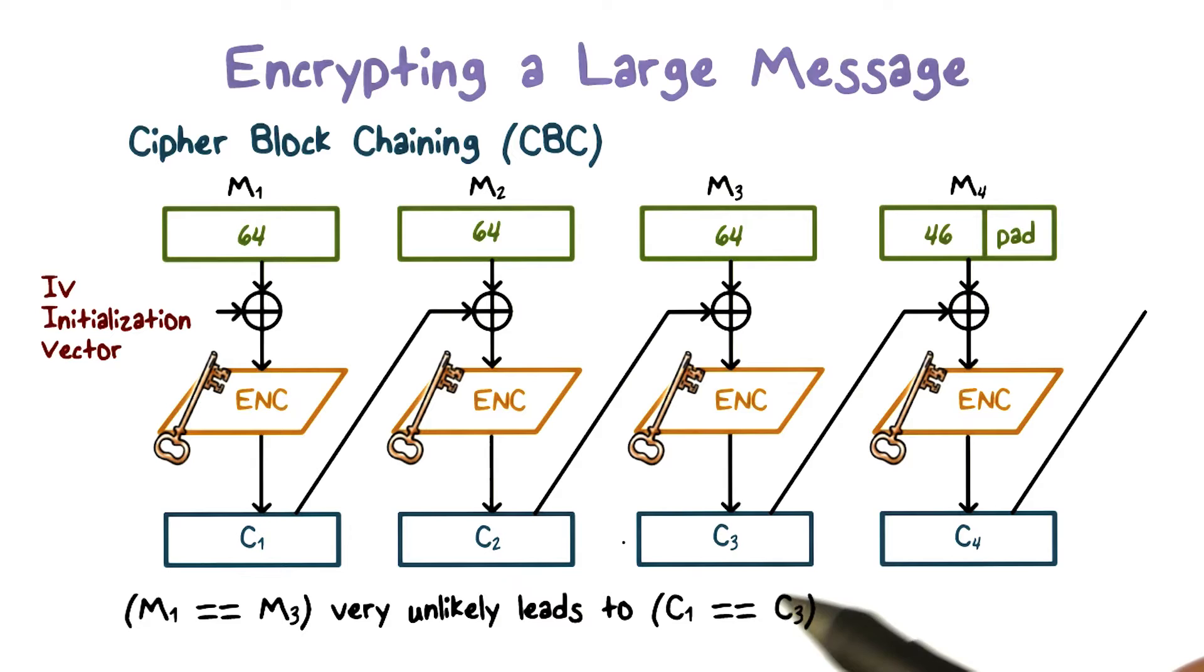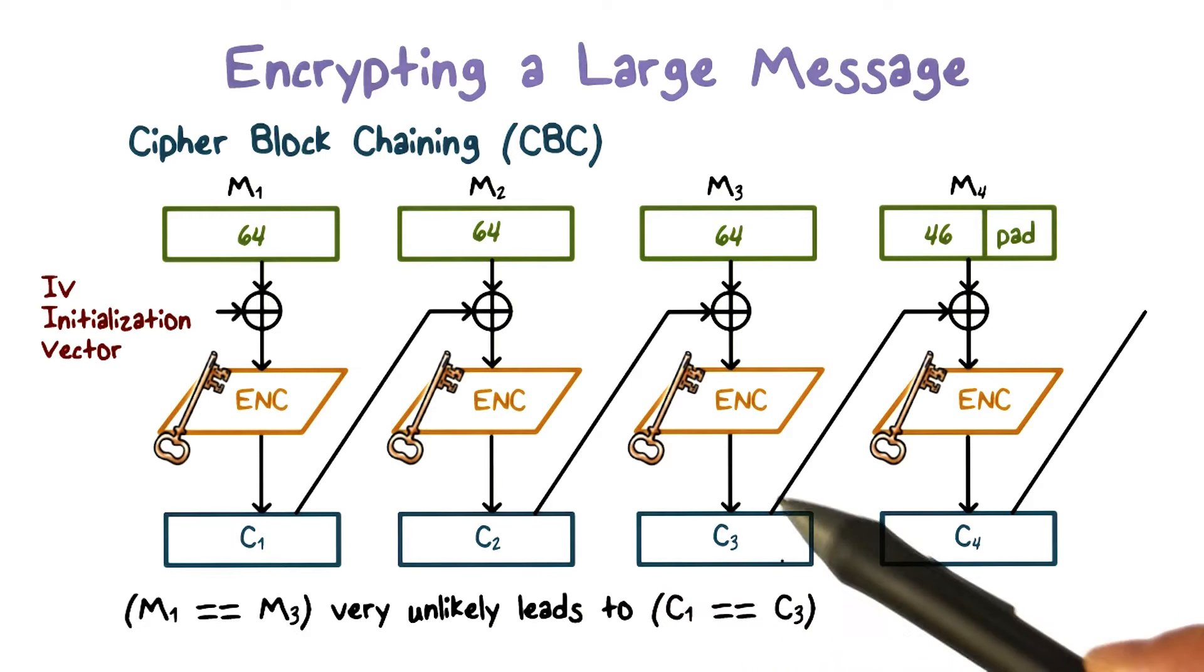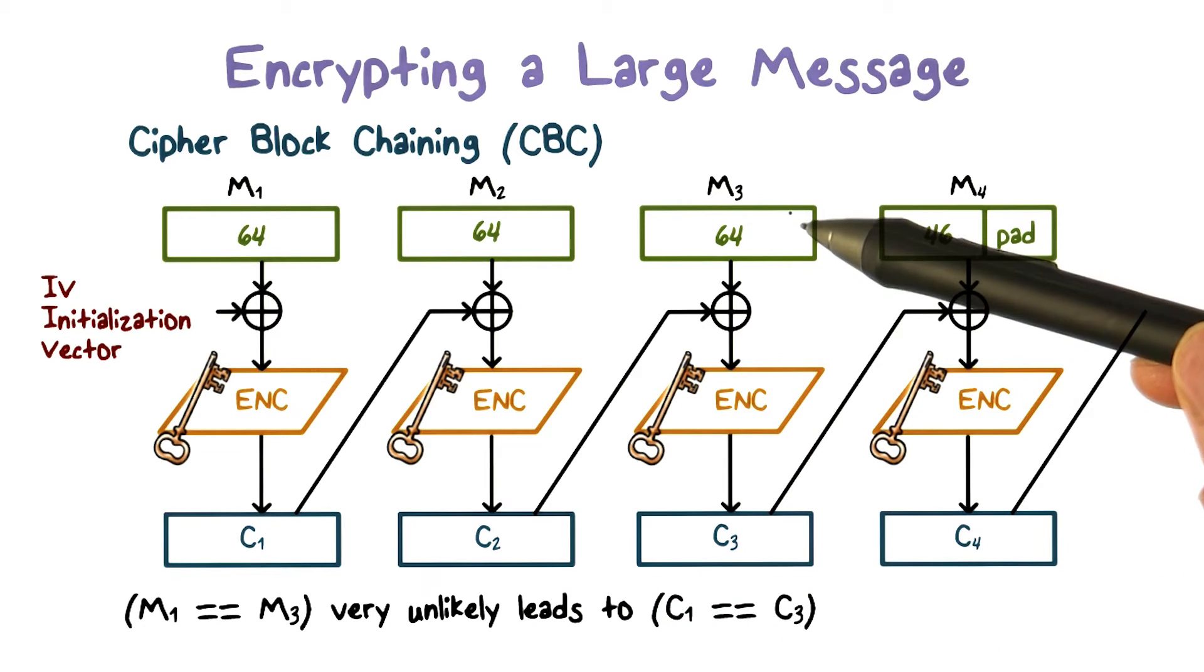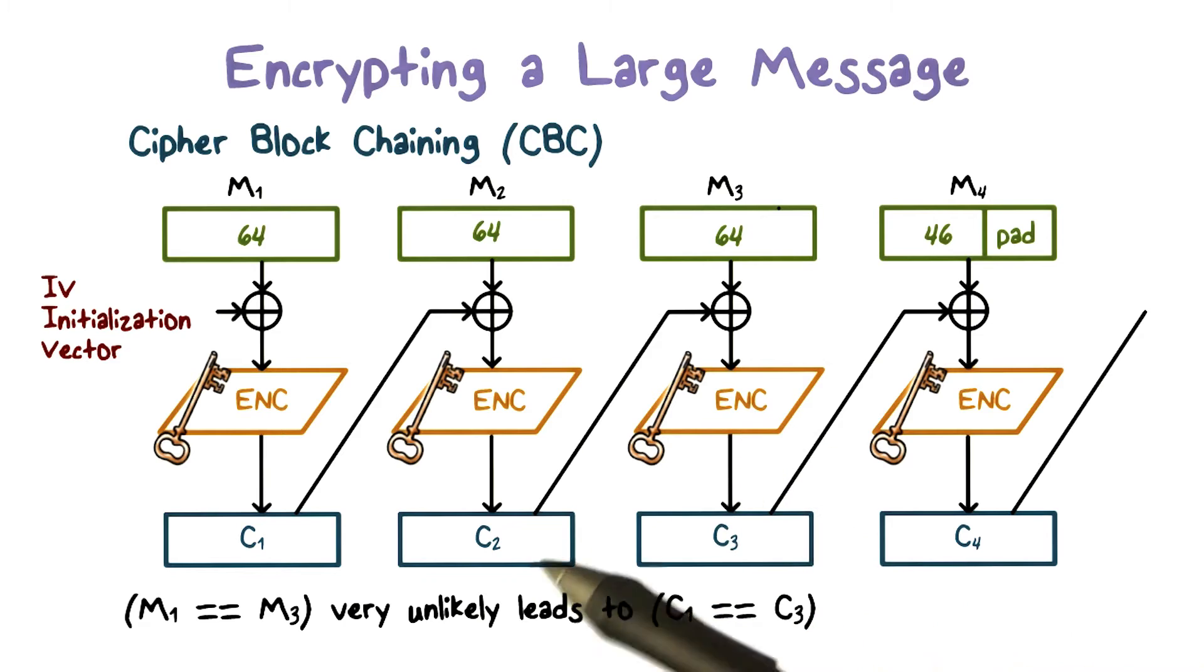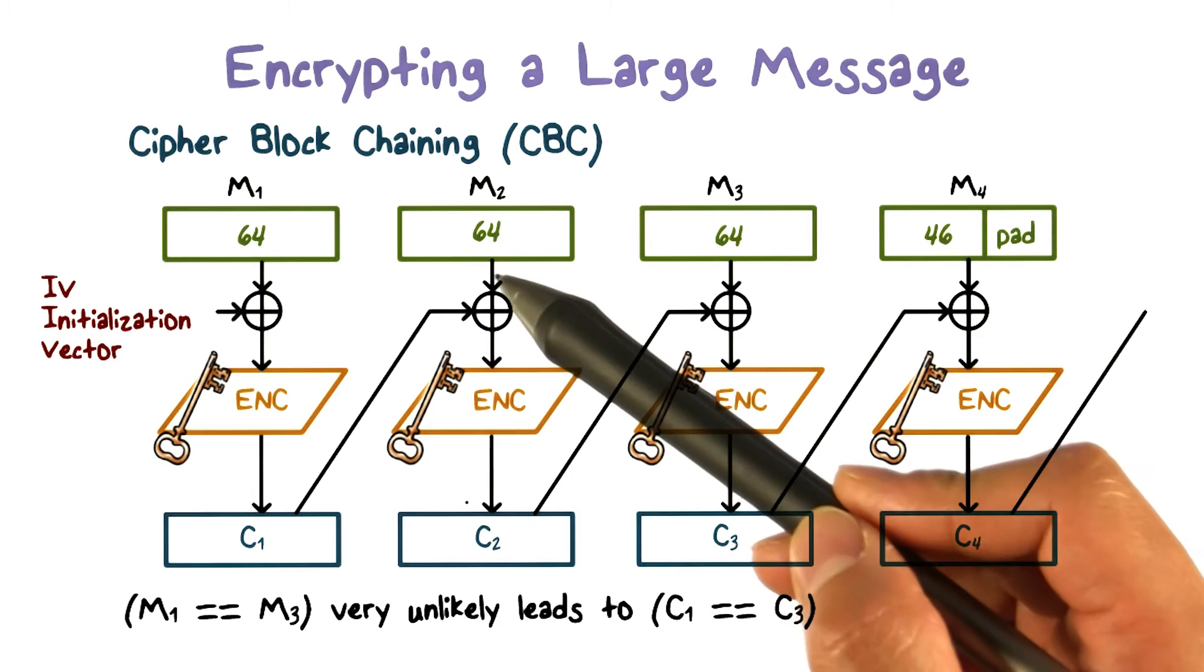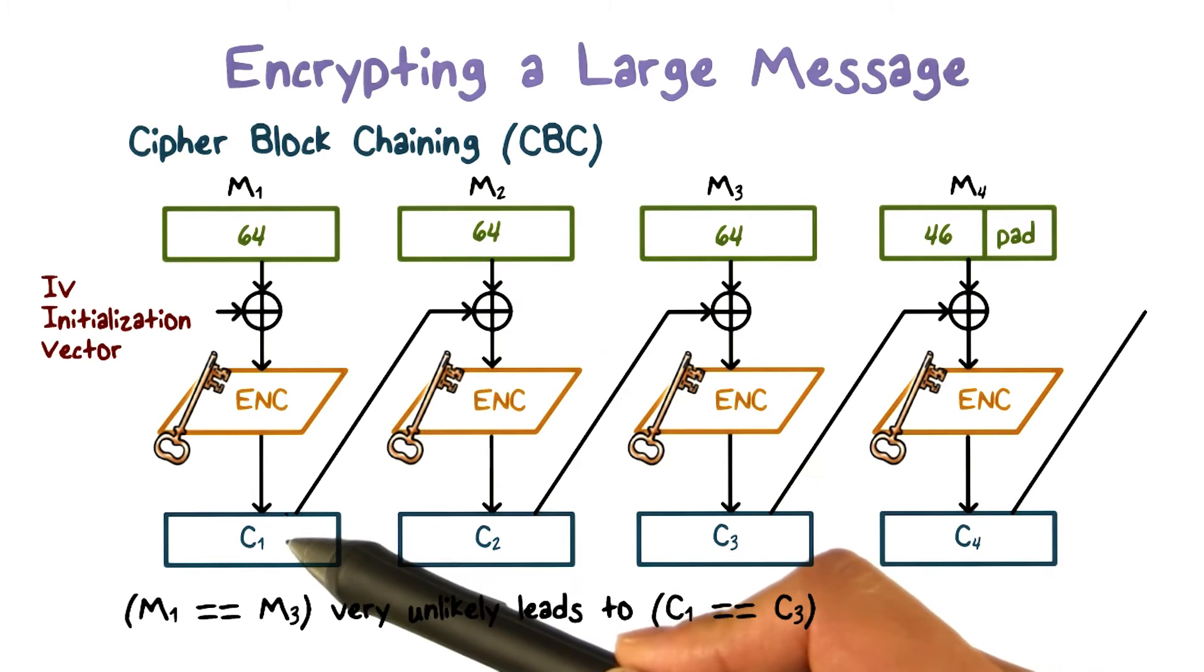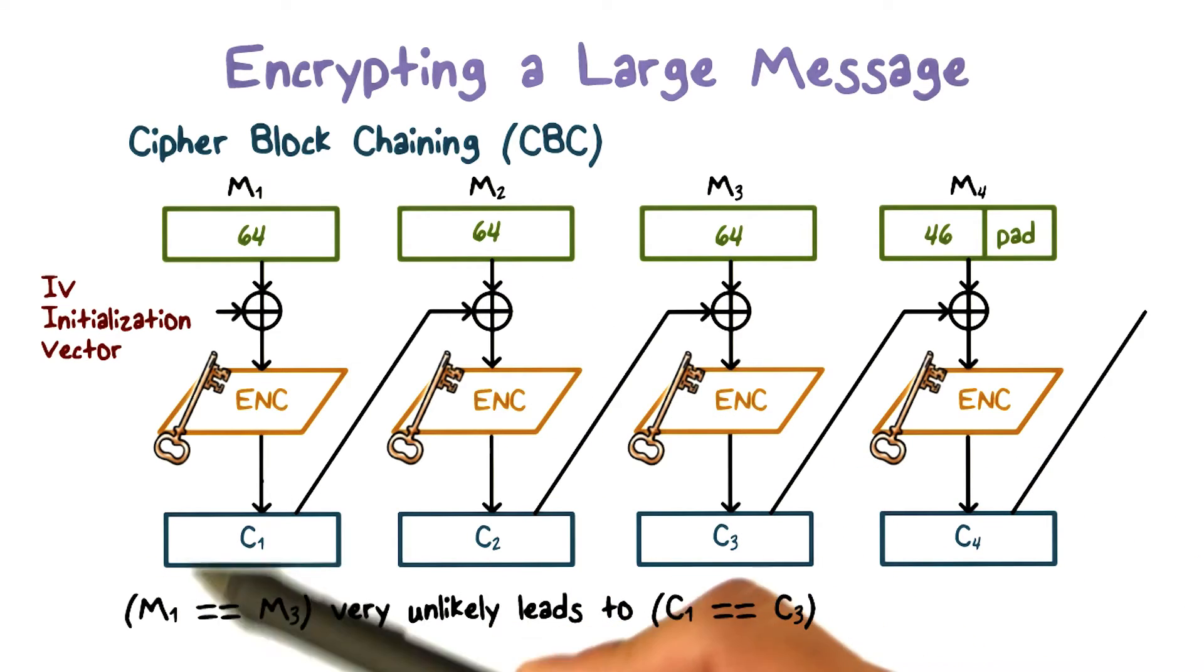Again, in CBC, the current ciphertext block depends not only on the current plaintext block, but also on the previous ciphertext block, which in turn depends not only on the previous plaintext block, but also the ciphertext block prior to that.